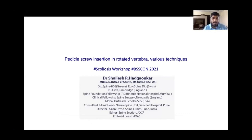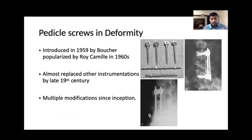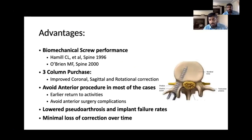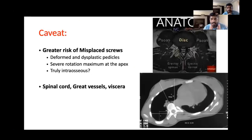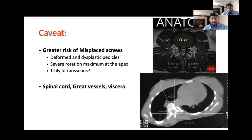Today I'm going to talk about pedicle screw insertion in rotated vertebra. We all know the evolution of pedicle screws and their usefulness in improving coronal, sagittal and rotational deformity. Important things in the apical region are always to be careful about dysplastic pedicles, absent pedicles, sclerotic pedicles, and the concerns of viscera, the greater vessels, as well as the medial wall and the spinal cord.